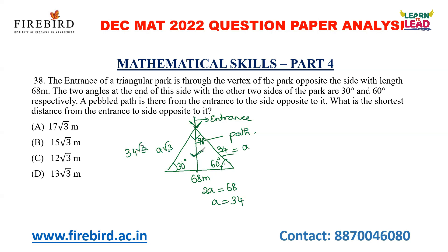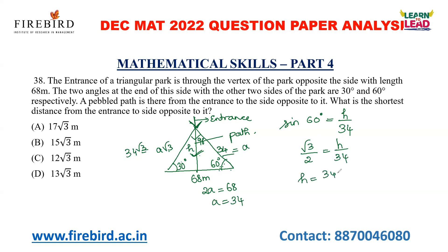A paved path goes from the entrance to the side opposite it, and we need to find the shortest distance — that is the height Y. I know the hypotenuse is 34 and the angle is 60 degrees. The opposite side of 60 degrees uses sin 60. So sin 60 = H/34. Since sin 60 = √3/2, we get H = 34√3/2 = 17√3 meters. So 17√3 meters is your answer.